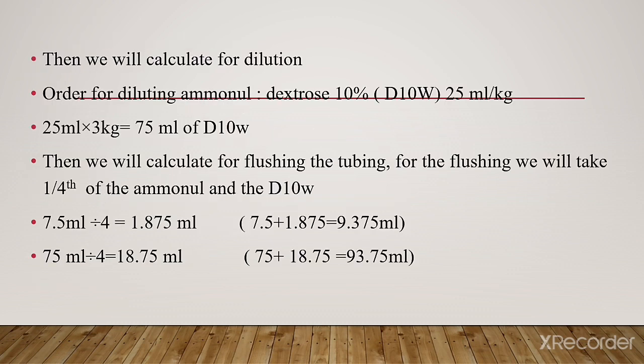We will calculate dilution because aminol and arginine should be given after dilution with dextrose. The order for diluting aminol is dextrose 10% at 25 ml per kg — this is constant. So 25 ml × 3 kg equals 75 ml of dextrose in water.